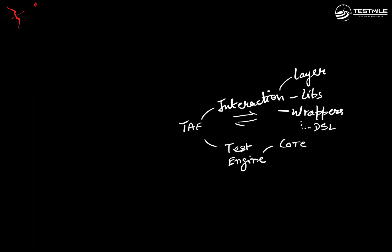So you end up creating some base test classes or wrappers around the raw functionality — not as elaborate as the interaction libs, but a mini-DSL which sort of evolves in your framework. And just like interaction libraries, is there something wrong with this? Actually not. This is a very natural progression for a mature framework.